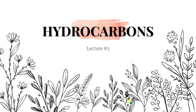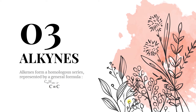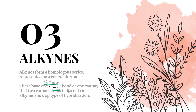Alkynes — the general formula: alkynes form a homologous series represented by the general formula CₙH₂ₙ₋₂, and there will be at least one C triple bond C (carbon-carbon triple bond).